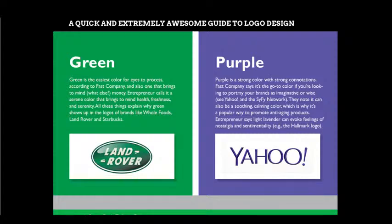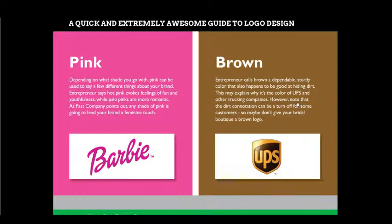Purple can also be a soothing, calming color, which is why it's popular for promoting anti-aging products. Light lavender can evoke feelings of nostalgia and sentimentality, like the Hallmark logo. Purple also represents education and creativity. Pink, depending on the shade, can convey different things — hot pink evokes feelings of fun and youthfulness, while pale pink is more romantic. Any shade of pink lends a brand a feminine touch, making it preferable for brands like Barbie, makeup shops, or beauty salons.